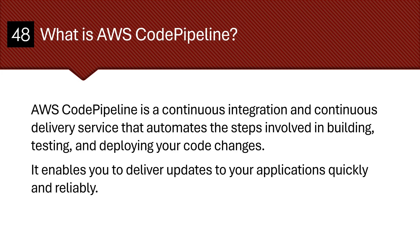What is AWS CodePipeline? AWS CodePipeline is a continuous integration and continuous delivery service that automates the steps involved in building, testing, and deploying your code changes. It enables you to deliver updates to your applications quickly and reliably.